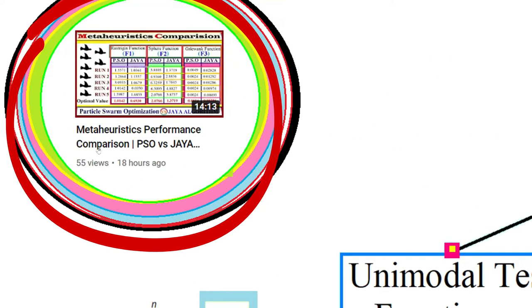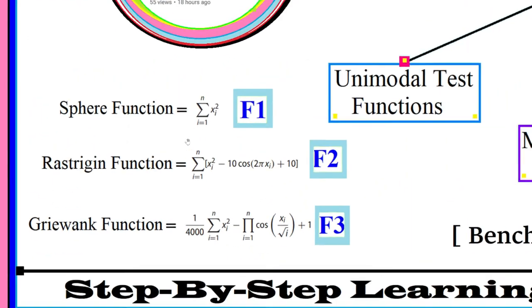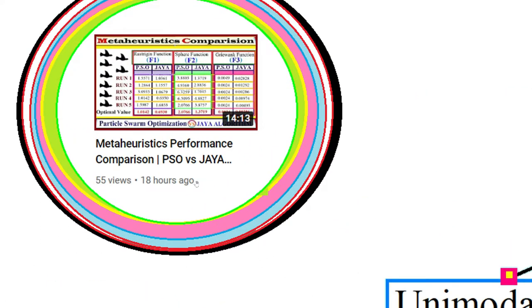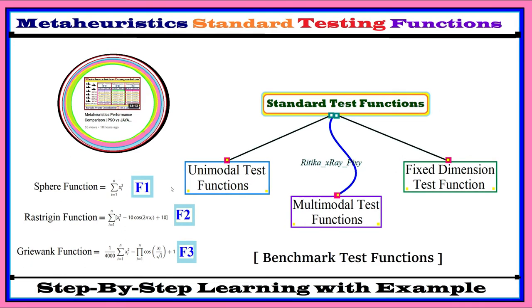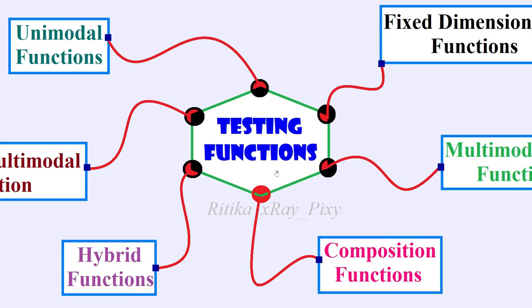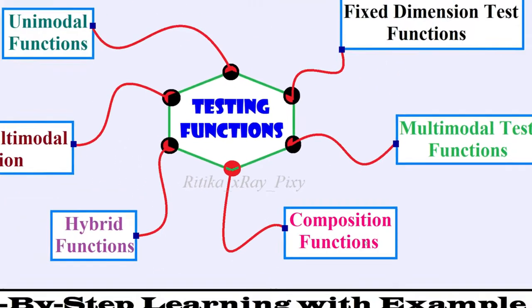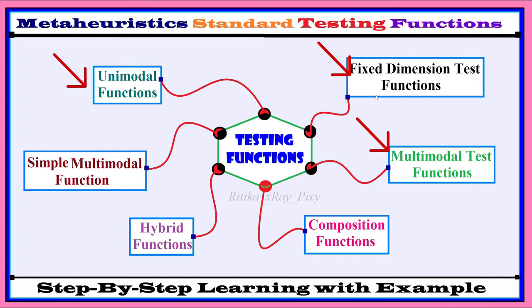For example, in this video we used unimodal and multimodal test functions to compare particle swarm optimization algorithm with geo-optimization algorithm. The comparison is done based on the algorithm's computation time and the optimal value obtained for each test function. We have different types of testing functions: composition functions, hybrid functions, fixed dimension test functions, and multimodal and unimodal test functions.